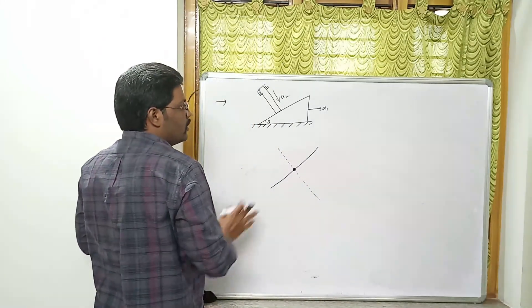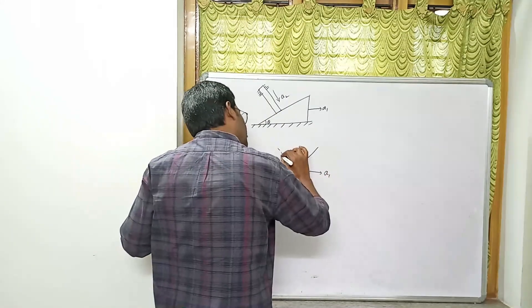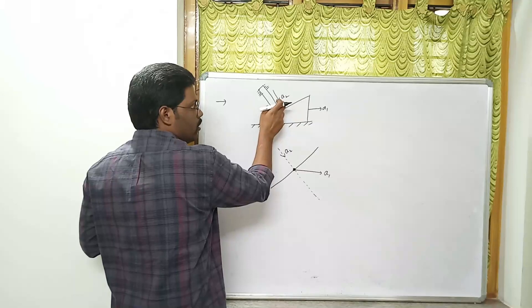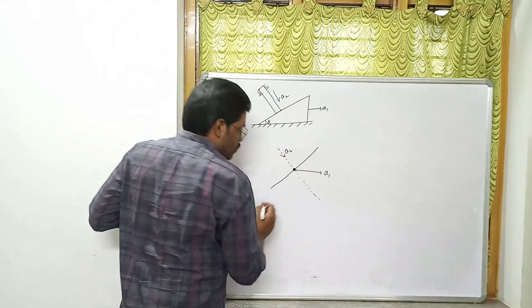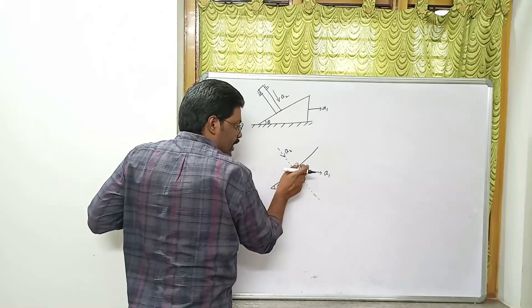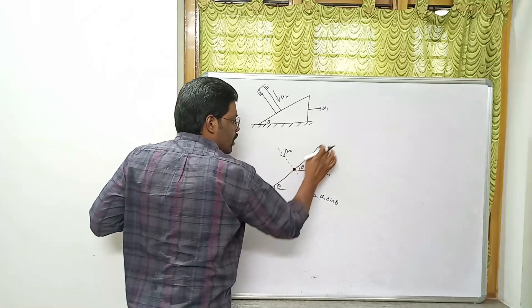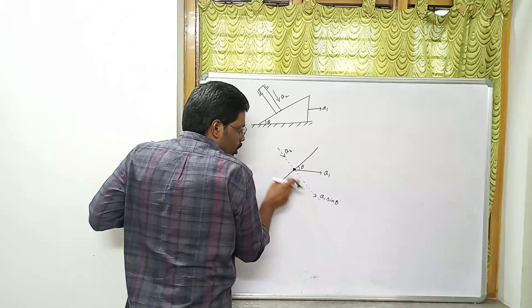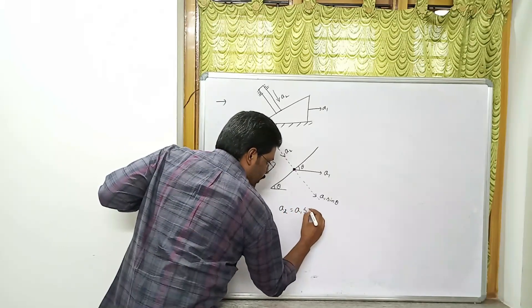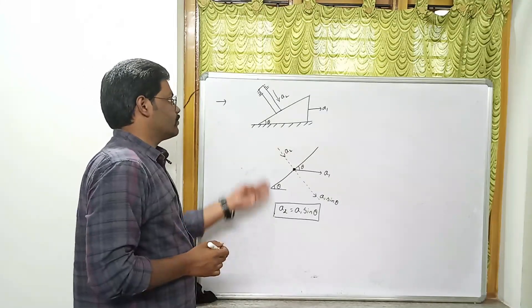Representing the accelerations: a1 is present on the normal line itself, and a2 is also present on the normal line itself. Since the surface makes an angle of theta, if a1 makes an angle of theta with the common tangent, then a1 sinθ and a2 are both on the same normal line. Equalizing them: a2 = a1 sinθ is the final answer for this example.